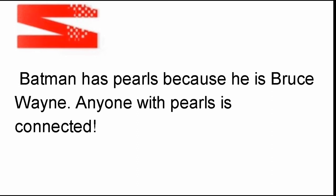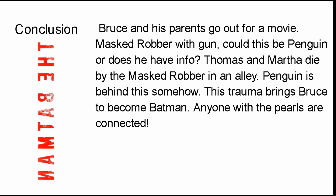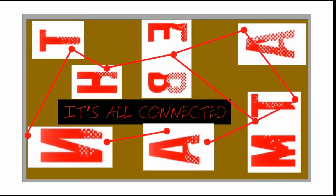Batman also has pearls because he is Bruce Wayne. Anyone with pearls is connected. So, conclusion: Bruce and his parents go out for a movie. Masked robber with gun — could this be Penguin, or does he have info? Thomas and Martha die by the masked robber in an alley. Penguin is behind this somehow. This trauma brings Bruce to become Batman. Anyone with the pearls is connected. It's all connected.